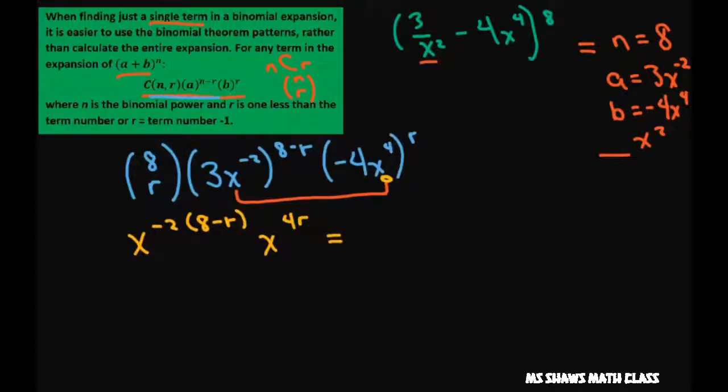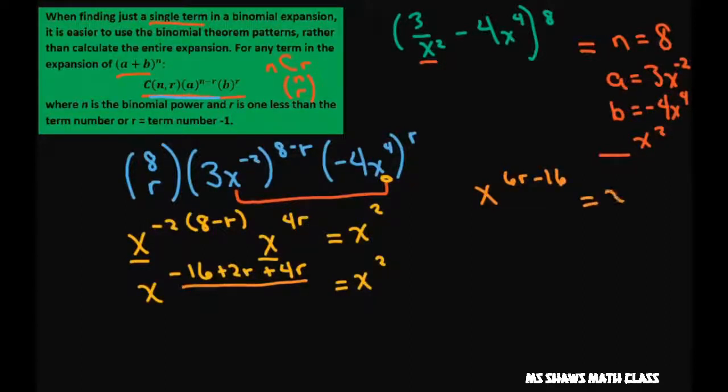And we want this r, we want to solve for r. So I'm going to combine my x's using the product property of exponents. You get negative 16 plus 2r and then we can just add the 4r with properties of exponents. We want this to equal x squared.